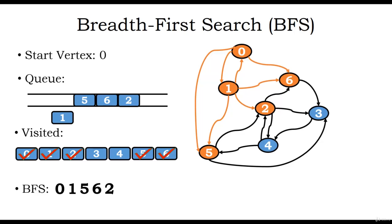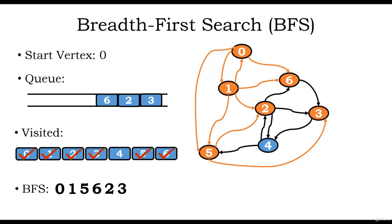We apply a dequeue operation which dequeues vertex 5. From vertex 5 we can visit vertex 2, which is already visited. We can visit vertex 3, which is not yet visited, so we visit vertex 3, mark it as visited, and enqueue it. We again apply a dequeue operation since there are still elements in the queue. The dequeued vertex is vertex 6. From vertex 6 we can visit vertex 3, but it is already visited, and there are no other edges.